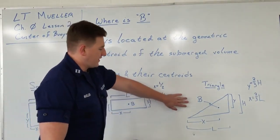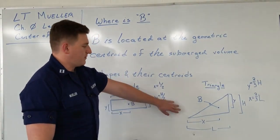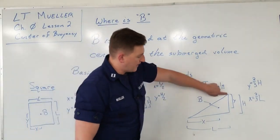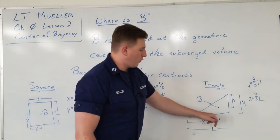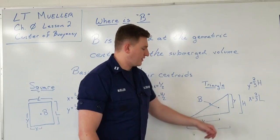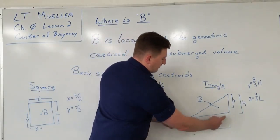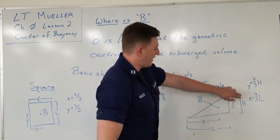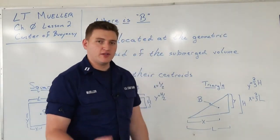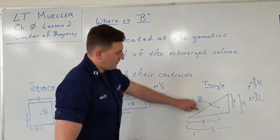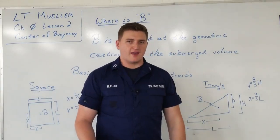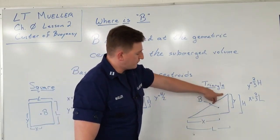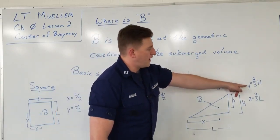Triangles can be a little tricky. Here's a tip: especially for right triangles, if you look horizontally you have the pointy end and the big end. The centroid is always going to be two-thirds away from the point, or equivalently one-third away from the big end. So vertically in this right triangle, here's the point and here's the big end — we're two-thirds away from the pointy end. So x equals two-thirds of L. Similarly in the vertical direction, the big end is at the base and the pointy end is at the top, so y measured from the top equals two-thirds of h.